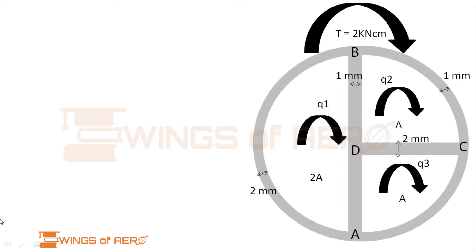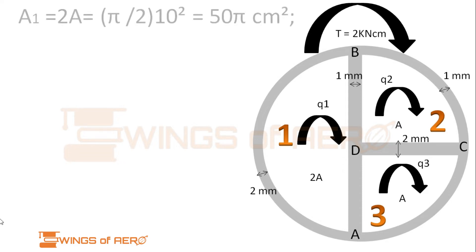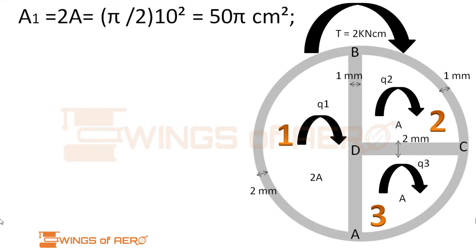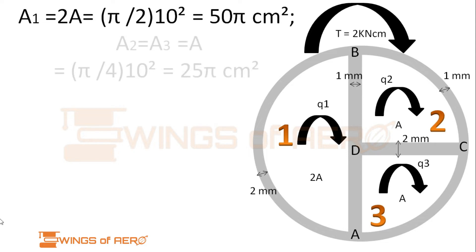This question consists of three nodes and three different elements. From the given data, the areas of cells 2 and 3 are the same, denoted by A. The area of cell 1 or element 1 is equivalent to twice of A. So the area A1 equals 2A = π/2 × 10² = 50π cm², because cell 1 is a semicircle and the area of a circle is πR².